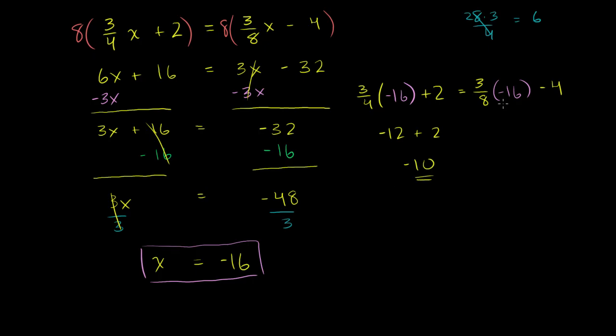Let's see what the right-hand side is. We have three-eighths times negative 16. If you divide negative 16 by 8, you get negative 2 times 3 is a negative 6. So it's a negative 6 minus 4. Negative 6 minus 4 is negative 10. So when x is equal to negative 16, it does satisfy the original equation. Both sides of the equation become negative 10. And we are done.